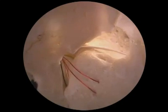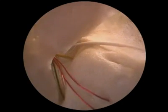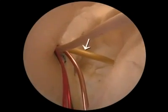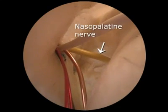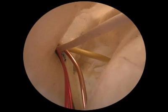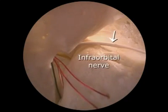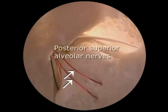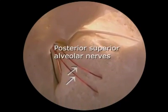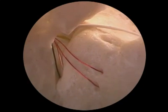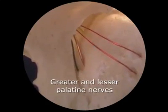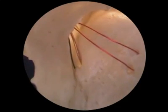These pieces of wire give us a simplified view of the main branches of the maxillary nerve as they emerge together from the foramen rotundum. The yellow wire represents the nasopalatine nerve, passing medially through the sphenopalatine foramen. The white wire indicates the infraorbital nerve. The two red wires represent the posterior superior alveolar nerves, which enter small holes in the maxilla. The gold and green wires show the greater and lesser palatine nerves passing downward to enter their respective canals.